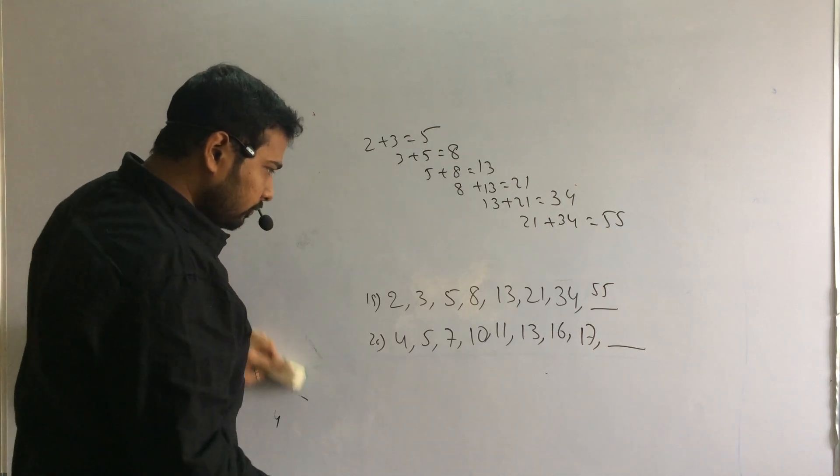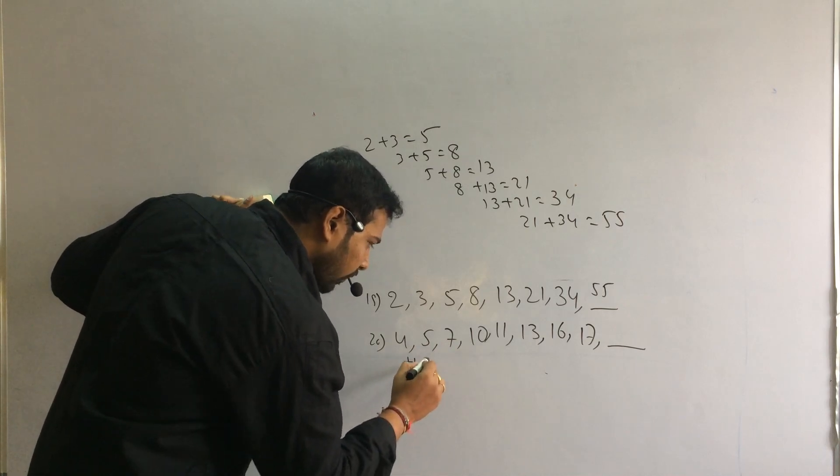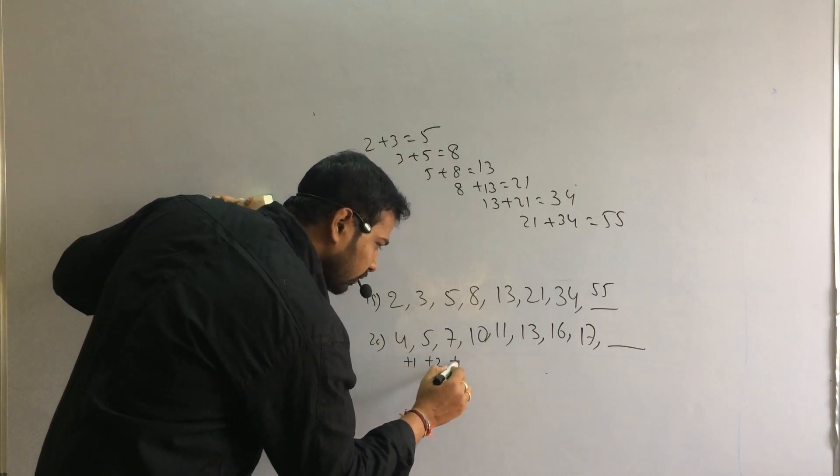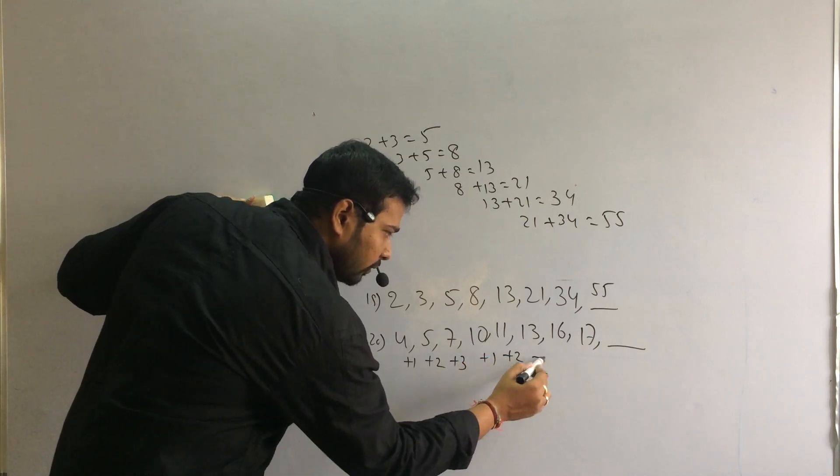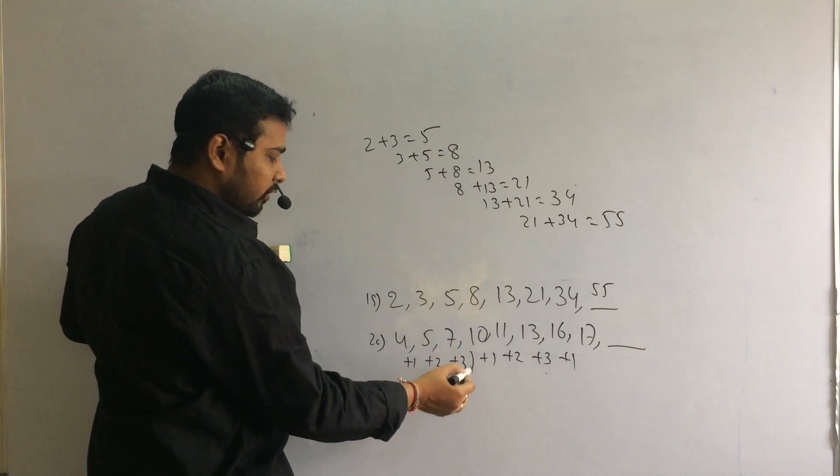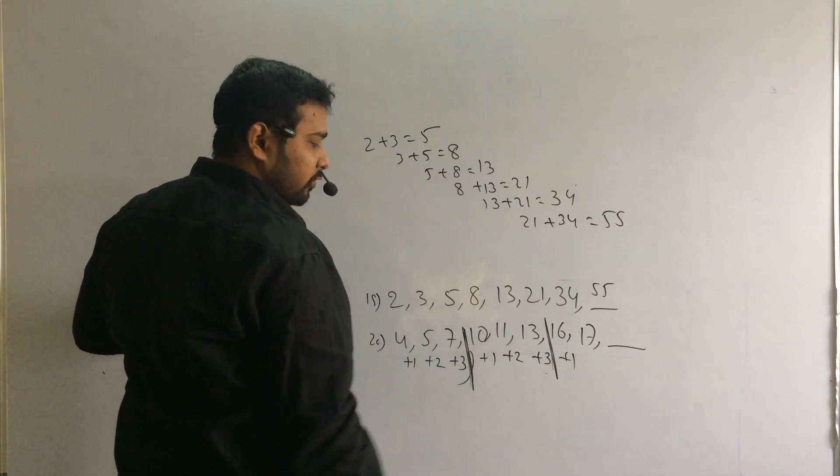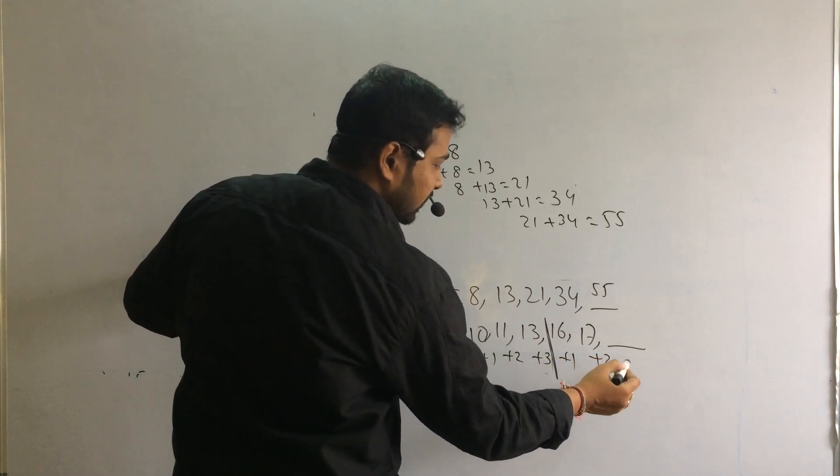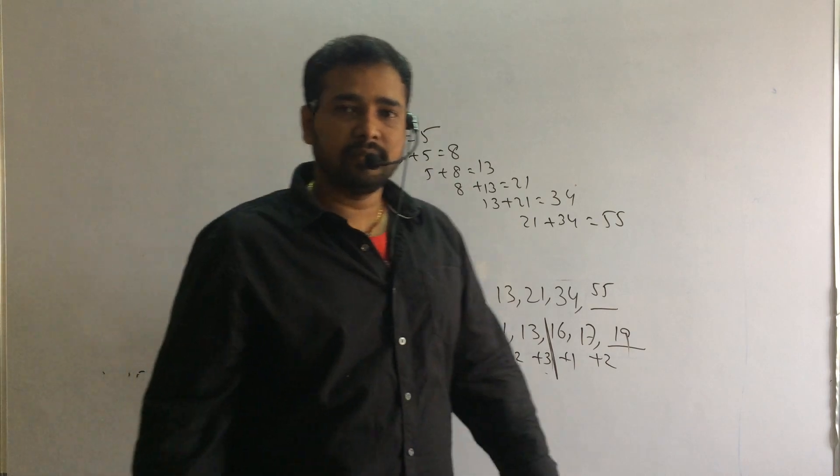Next. Here difference is very normal. Difference is 1, 2, 3. 1, 2, 3. 1. So difference is very normal. That difference is addition of the natural numbers, first three natural numbers. So after 1, next is 2. 19 is your answer. Next.